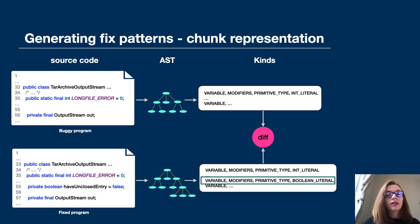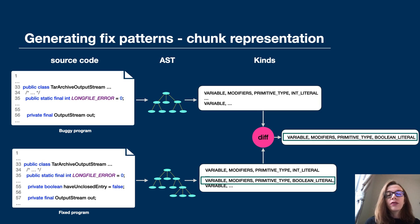Then we find a diff between two sequences of kinds. The sequence of kinds that represents the buggy source code, and the sequence of kinds that represents the fixed source code. And the diff is of course exactly these four inserted kinds.